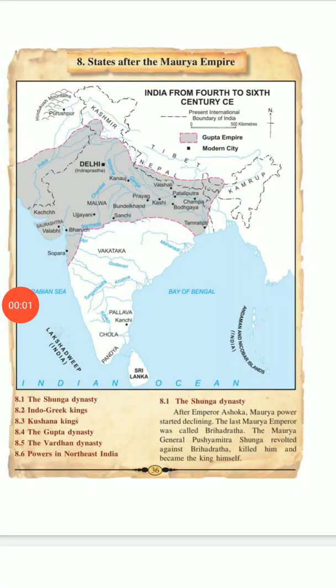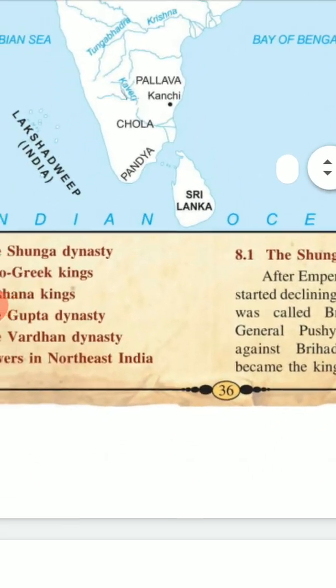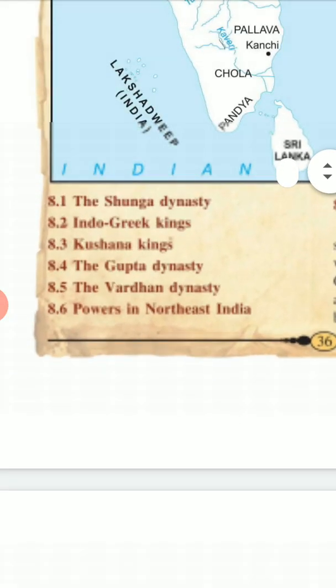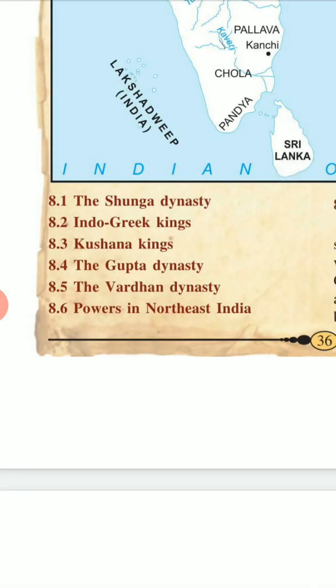Hello students, welcome to Smart World, a school of education. Let's start History Chapter 8: States after Maurya. In this chapter we are going to study the Shunga dynasty, the Indo-Greek kings, the Kushana kings, the Gupta dynasty, the Vardhan dynasty, and the powers in Northeast India.